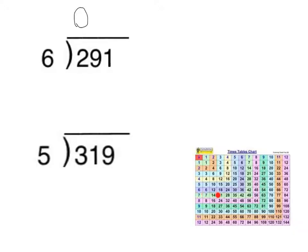So as I look across and I scan across, once I get to 30, I know I've gone past 29. So my closest number is 24. And 4 times 6 is 24. So I know that 6 fits into 29 4 times.